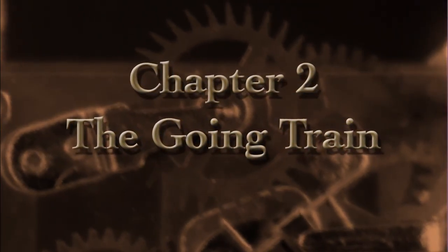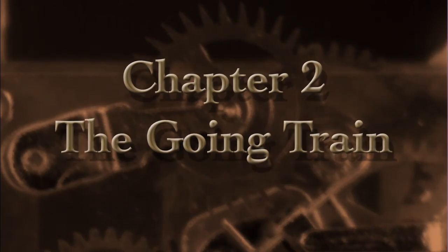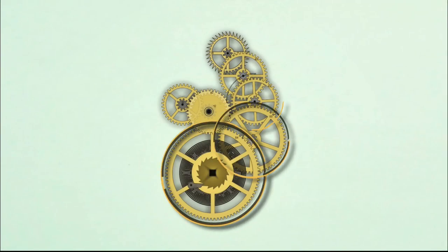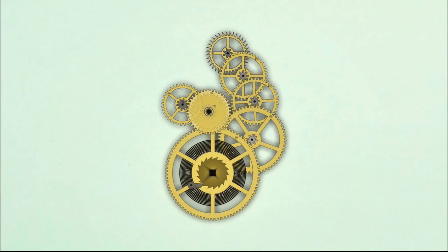First, let's talk about the entire system, the going train. In a clock, the large gears are called wheels. The wheels engage small gears called pinions, and a group of gears and pinions that interact with each other to accomplish a specific function, like telling time, is called a train.